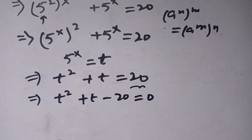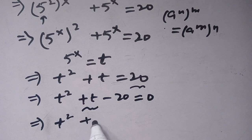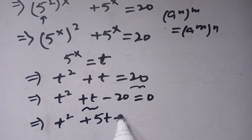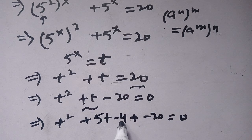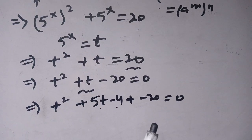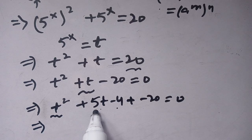Now it is a quadratic equation. We can break the middle term such that t squared plus 5t minus 4t minus 20 is equal to 0. As 5t minus 4t becomes t, and 5 times 4 becomes 20. Now we take t common from the first two terms.